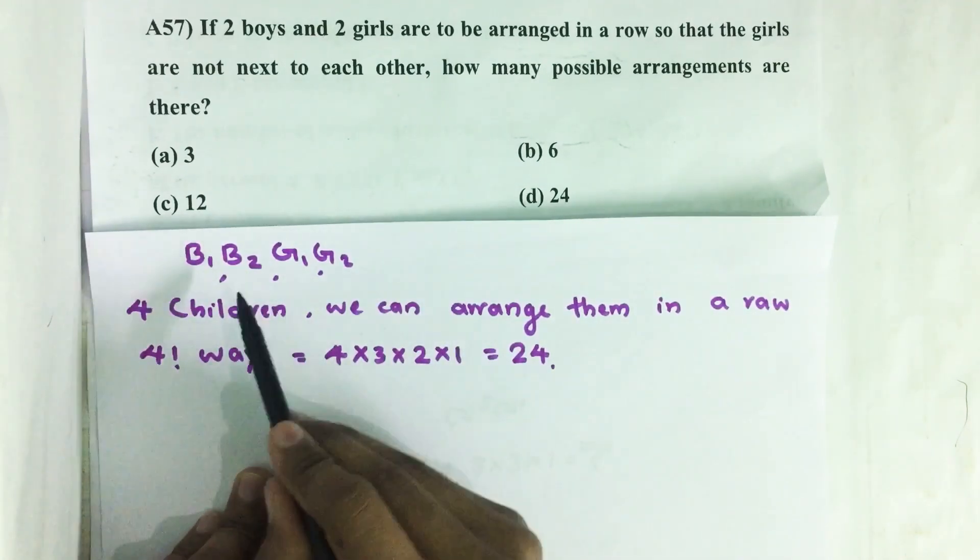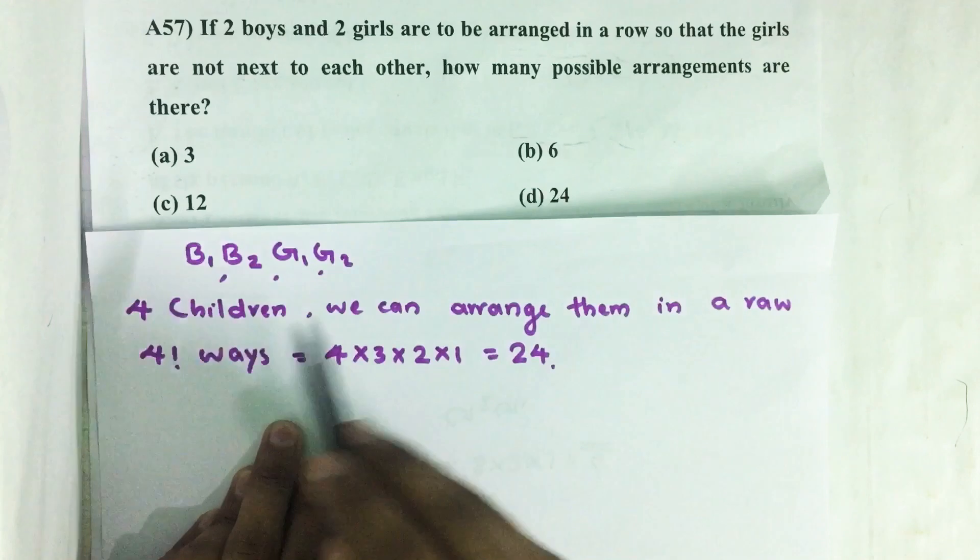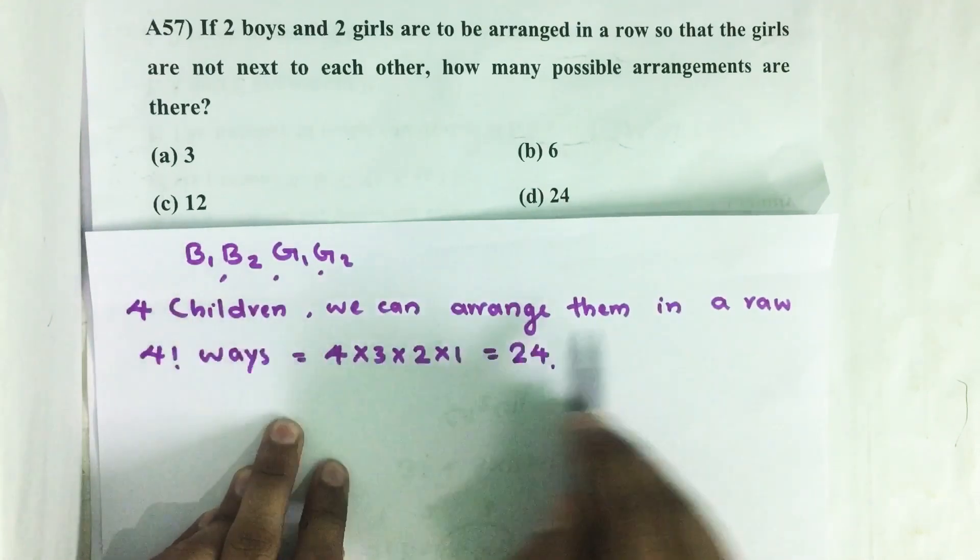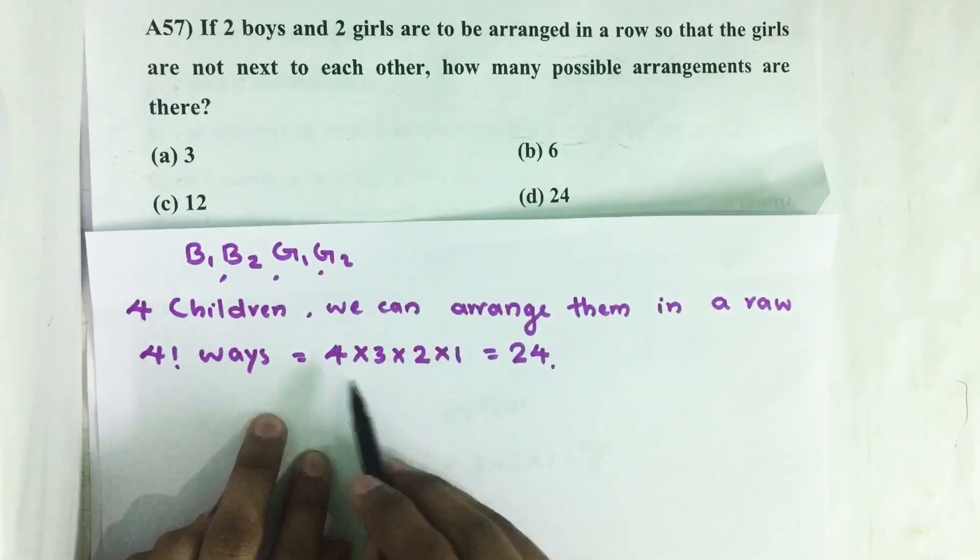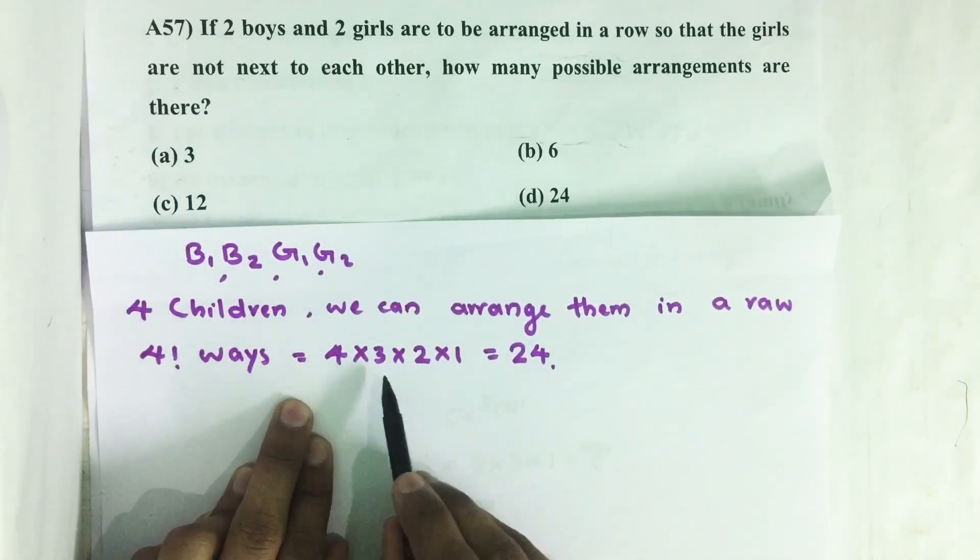So here we have two boys B1, B2 and two girls G1, G2. We have to arrange these four children in a row. If we are arranging four children in a row, we can arrange this in 4 factorial ways.